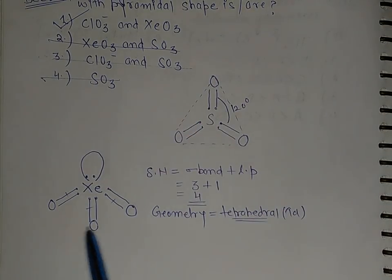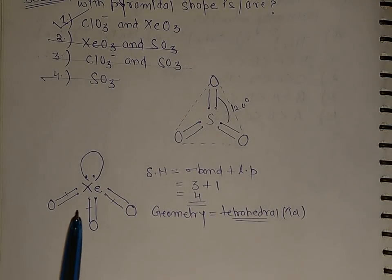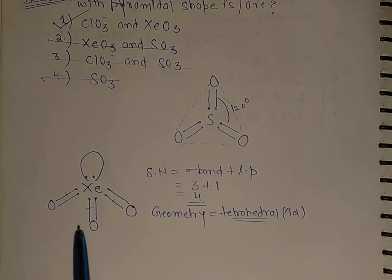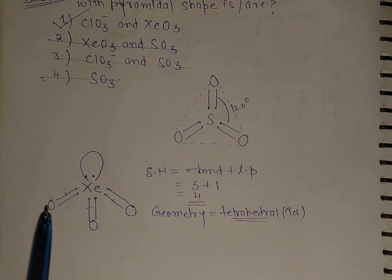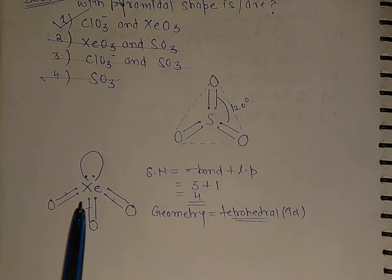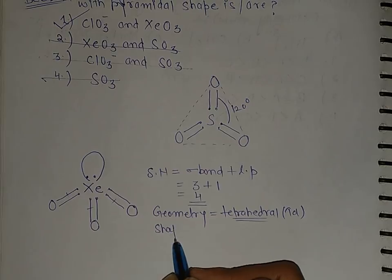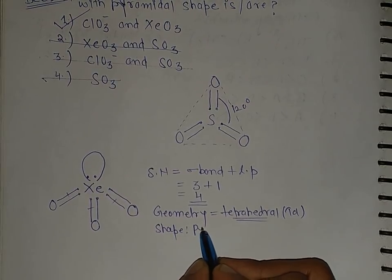The shape is pyramidal — just ignore the lone pair. Think of it like ammonia: nitrogen with three hydrogens and one lone pair. The geometry is tetrahedral, but the shape is pyramidal because when we consider the shape, we don't look at the lone pair.